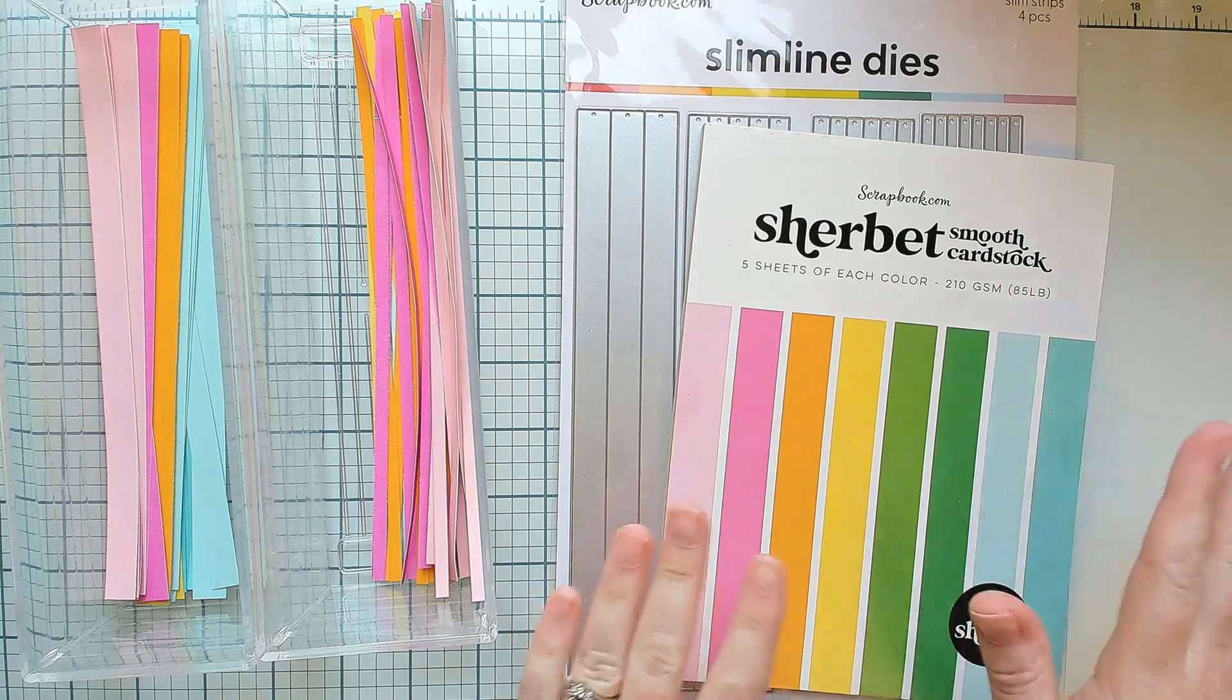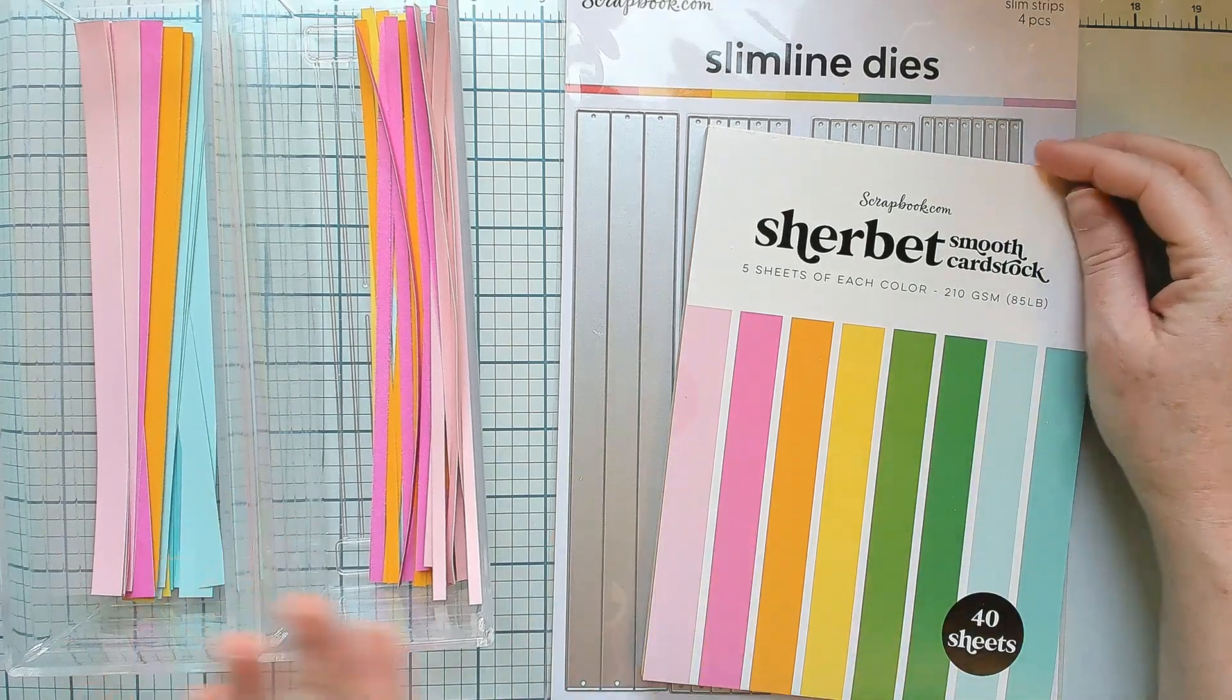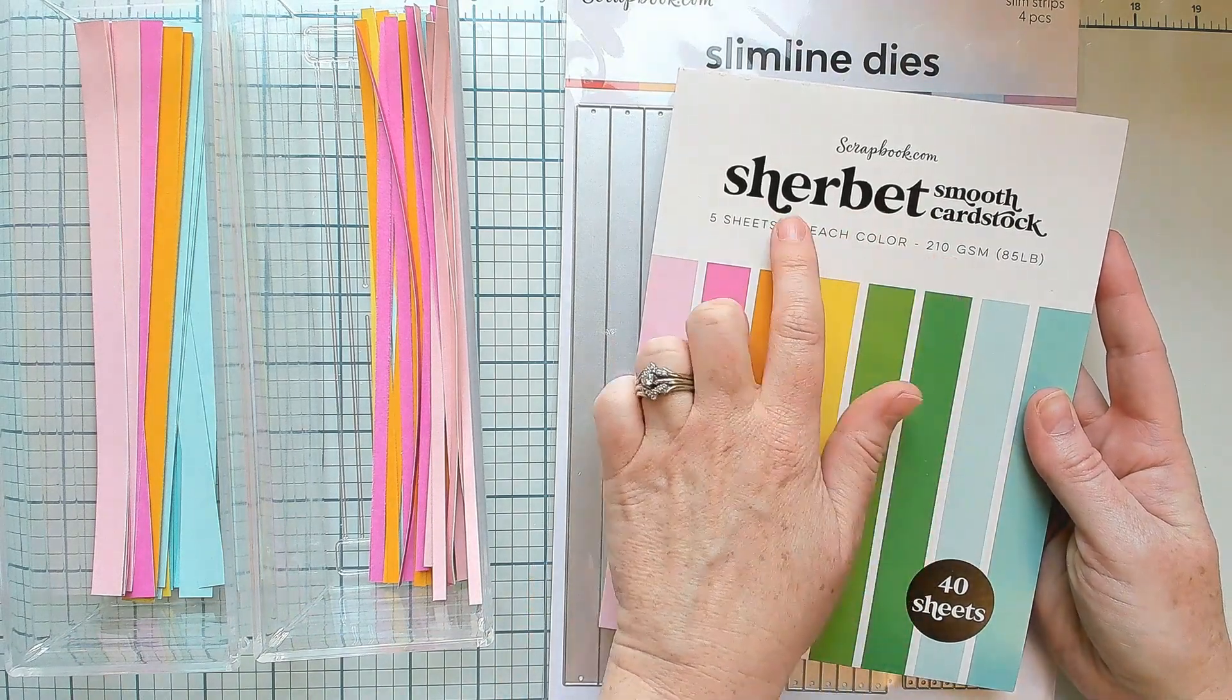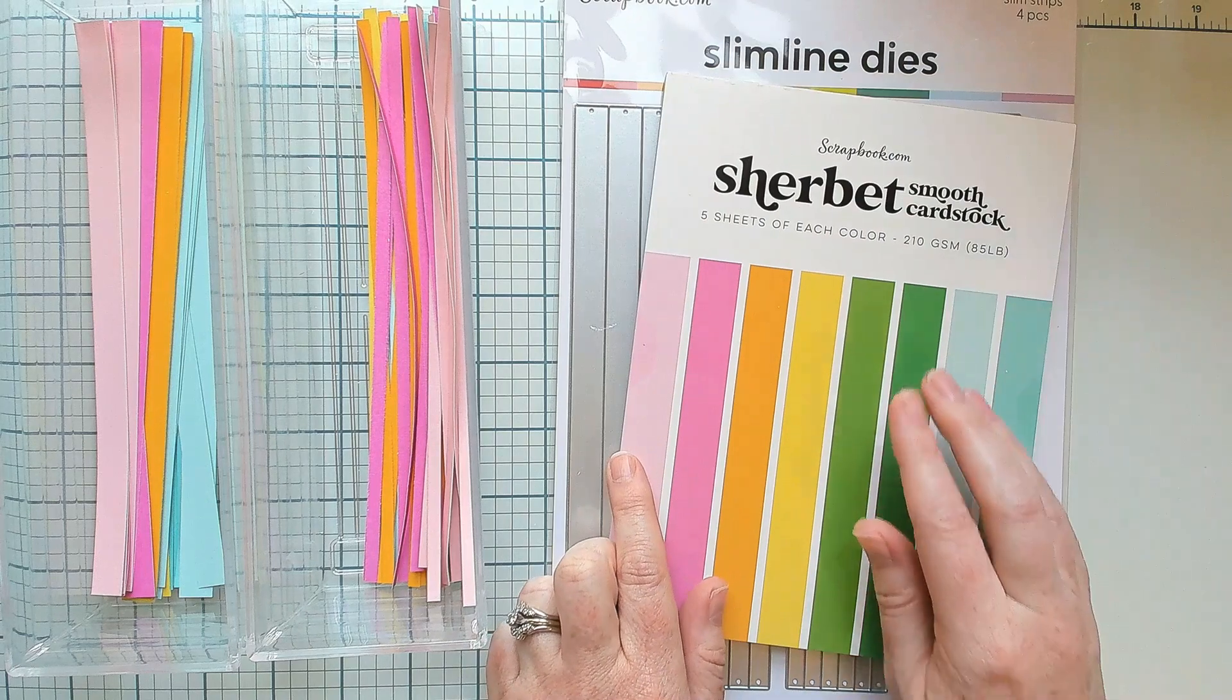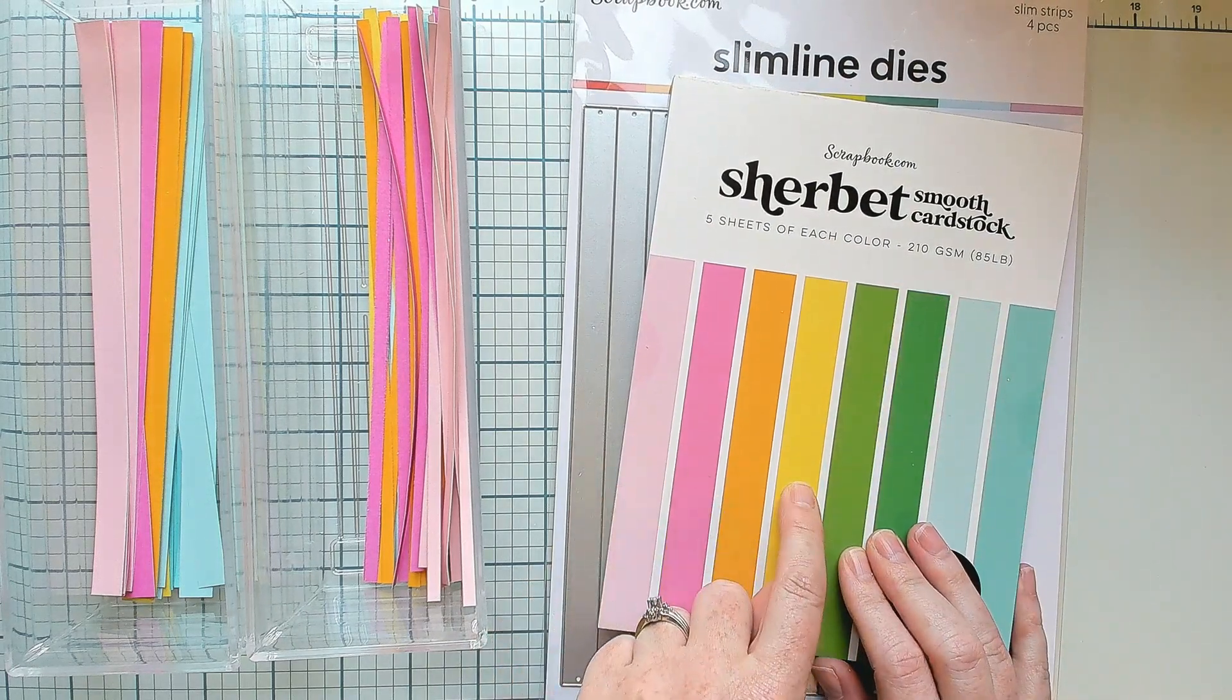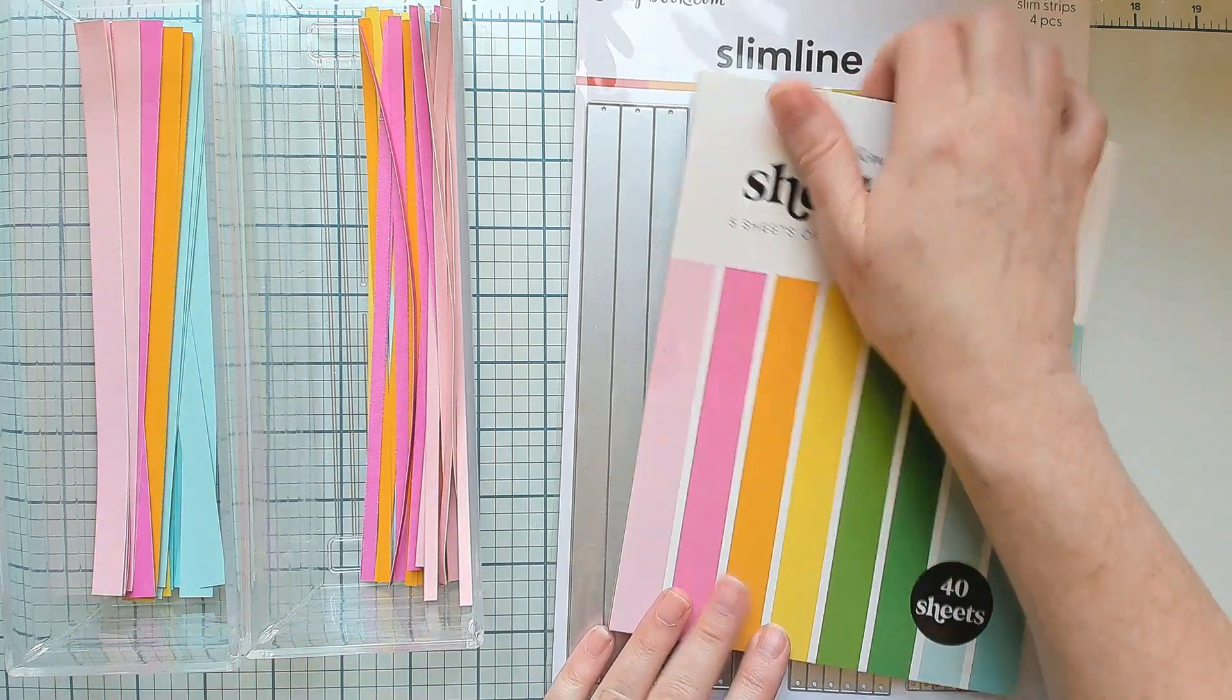Finally, for the last piece of homework, I would like you to cut the sherbet smooth cardstock—all of the colors except for the two greens. So pink through the yellow, and then the two aquas—cut them down into strips. Now there's two ways you can do this.